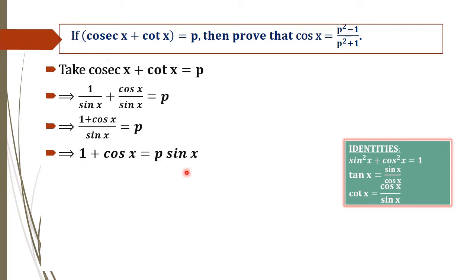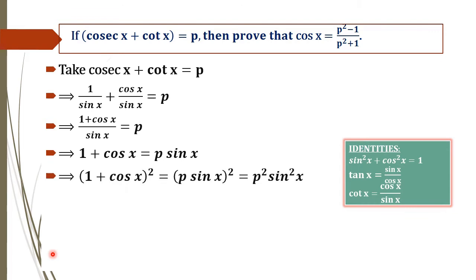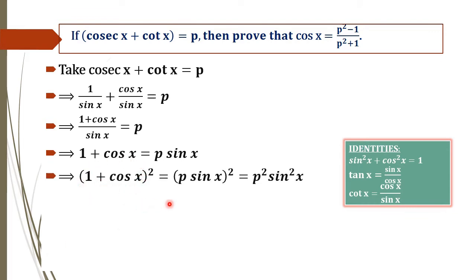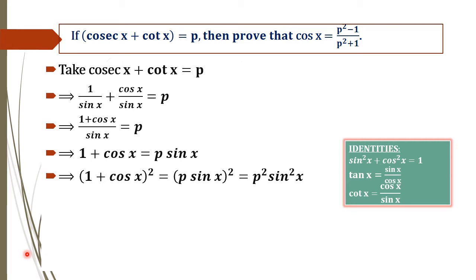By squaring on both sides, we will get 1 plus cos x whole square equal to p into sin x whole square, which is equal to p squared sin squared x. In the next step, we are changing sin squared x in terms of cos x, that is 1 minus cos squared x.